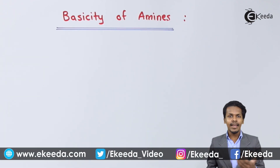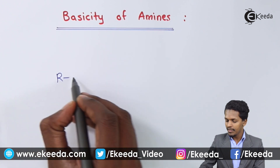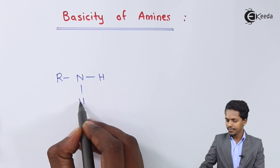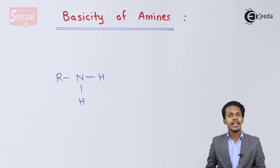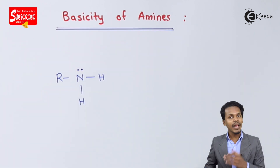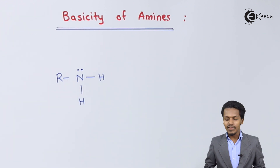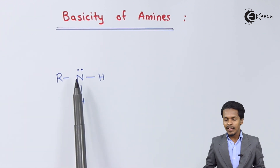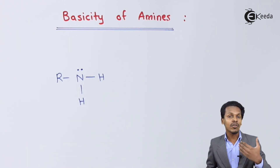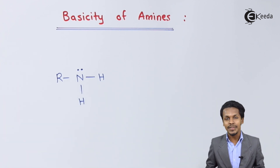If we consider an amine — for example, the primary amine R-NH2 — we understand that this nitrogen consists of a lone pair of electrons. Whether it is primary, secondary, or tertiary, the nitrogen will have a lone pair of electrons, and that gives it the capacity to donate this lone pair to other compounds. That is why it acts like a Lewis base.